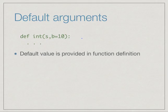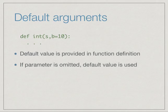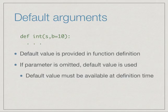The default value is provided in the function definition, and if that parameter is omitted, then the default value is used instead. But one thing to remember is that this default value is something that is supposed to be available when the function is defined. It cannot be something which is calculated when the function is called.